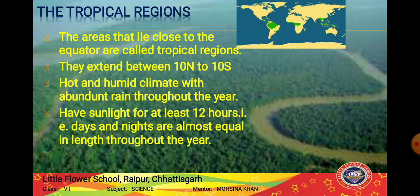Tropical regions have hot and humid climate with abundant rainfall throughout the year and sunlight for at least 12 hours a day - meaning days and nights are almost equal in length. Very dense rainforests are found here. In India, rainforests are found in the Western Ghats and northeastern parts, and also in Southeast Asia, Central America, South America, Central Africa, and many islands of the Pacific Ocean.